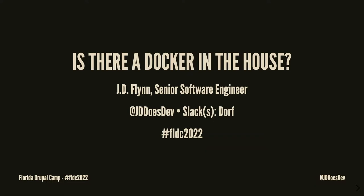Alright, so everybody, welcome. Thanks for having me and I'm so glad to be back in person. So glad to see all of you. For those of you who don't know me, I'm JD Flynn. My job title is Senior Software Engineer but I'm just a Ripple Developer. You can find me on Twitter at JDDoesDev. On any Slack, I go as Dorf.